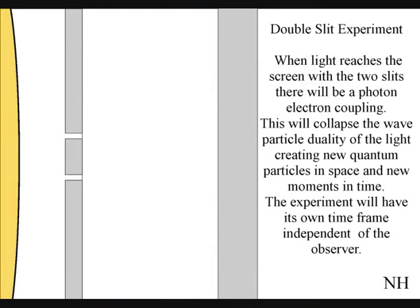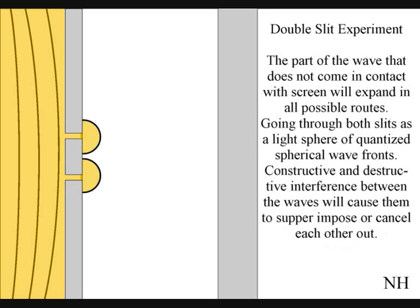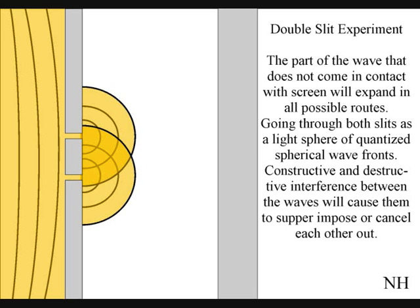When the light reaches the screen with the two slits, the photon will react with the electrons of the screen. This will collapse the wave particle duality of the light, creating new quantum particles in space and new moments in time. The part of the wave that does not come in contact with the screen will expand in all possible routes, going through both slits as two light spheres of quantized wavefronts.